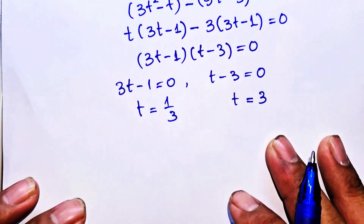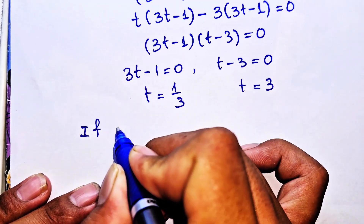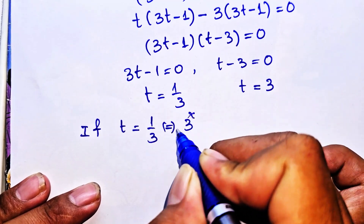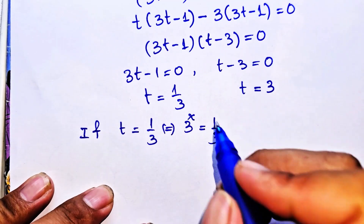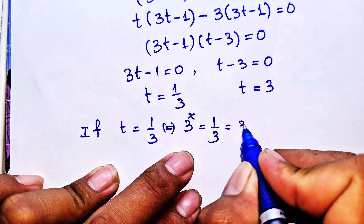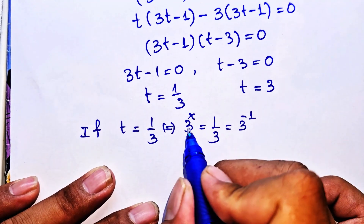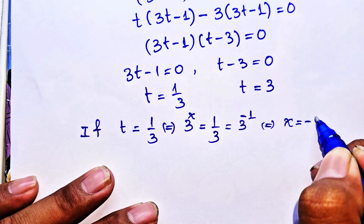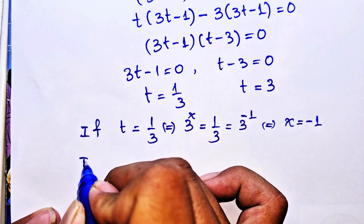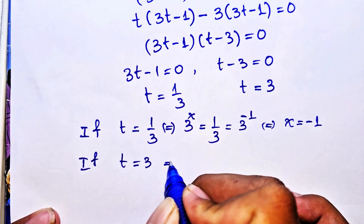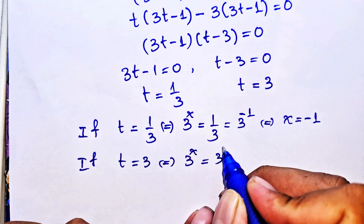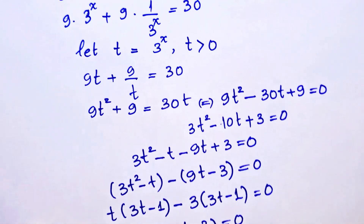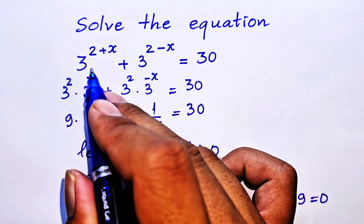Since t = 3^x, for t = 1/3 we get 3^x = 3^(−1), so x = −1. For t = 3 we get 3^x = 3^1, so x = 1.